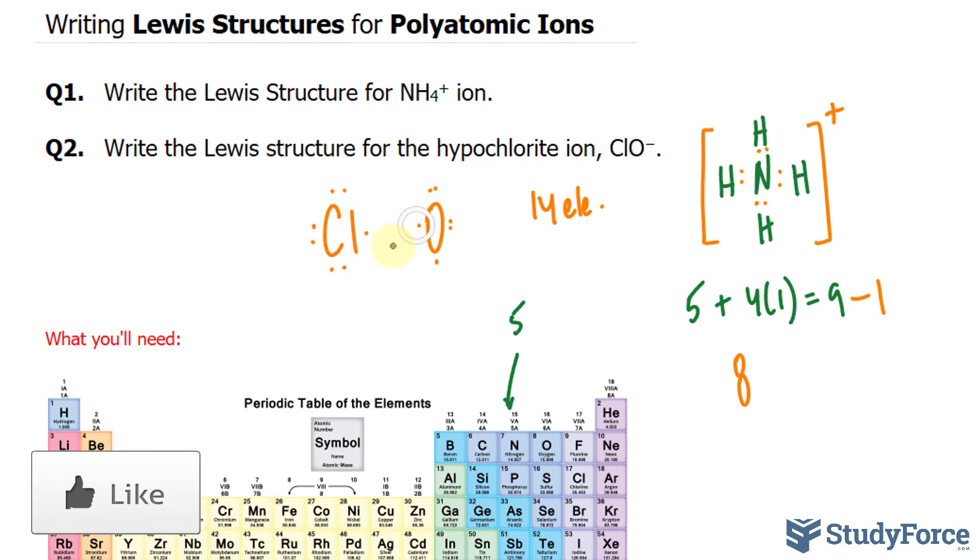This electron and this electron will make a pair. And given that there's an extra electron, that 14th electron, we'll place it right here. Once again, I'll put this in brackets and show the charge in the top right corner. And there you have it. That is how to write Lewis structures for polyatomic ions.